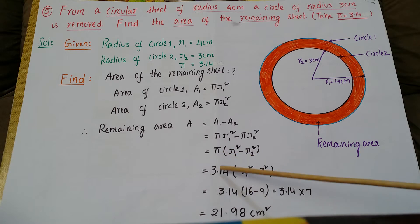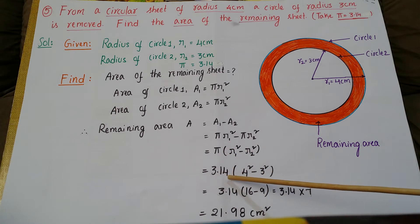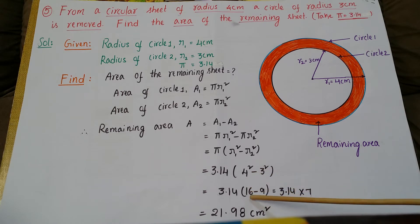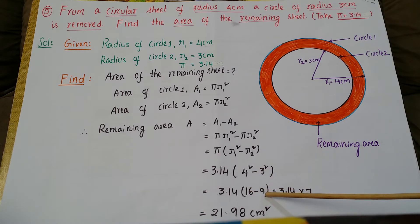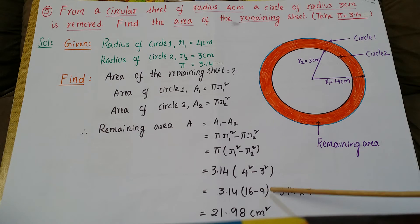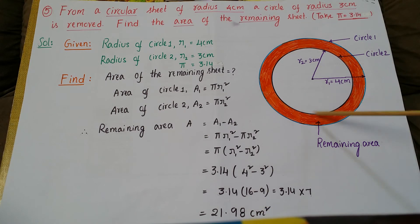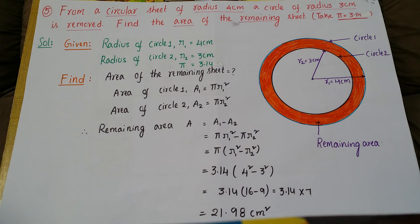Applying the values: pi = 3.14, r1² = 4² = 16, r2² = 3² = 9. So A = 3.14 × (16 − 9) = 3.14 × 7 = 21.98 cm². Therefore, the remaining area is 21.98 centimetres square.